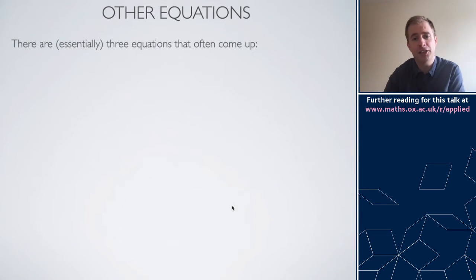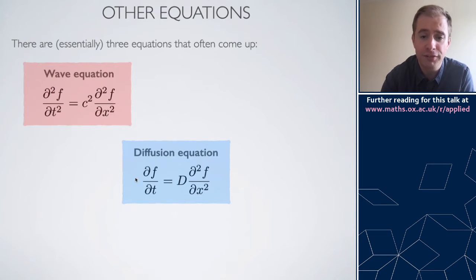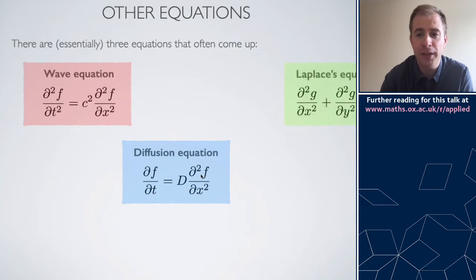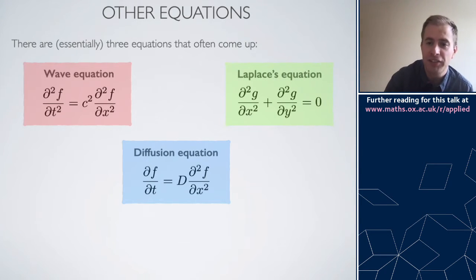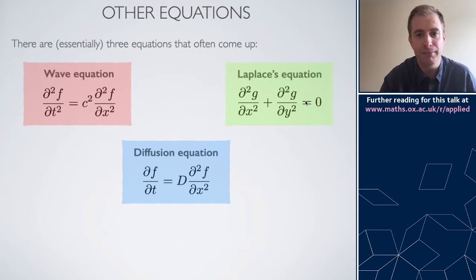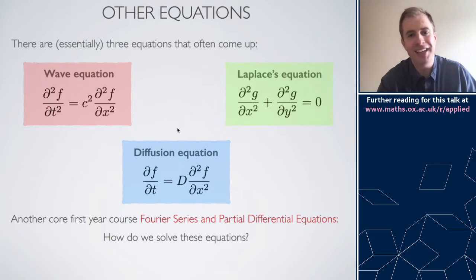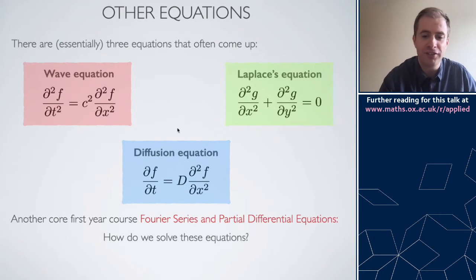Once you've got that notation under your belt, there are three equations that come up time and again. The first is the wave equation, involving two time derivatives and two space derivatives. The second is the diffusion or heat equation, involving only one time derivative and two space derivatives. The third is Laplace's equation, which looks like the wave equation with two derivatives in two different variables, but crucially they're on the same side of the equality — giving fundamentally different behaviour.